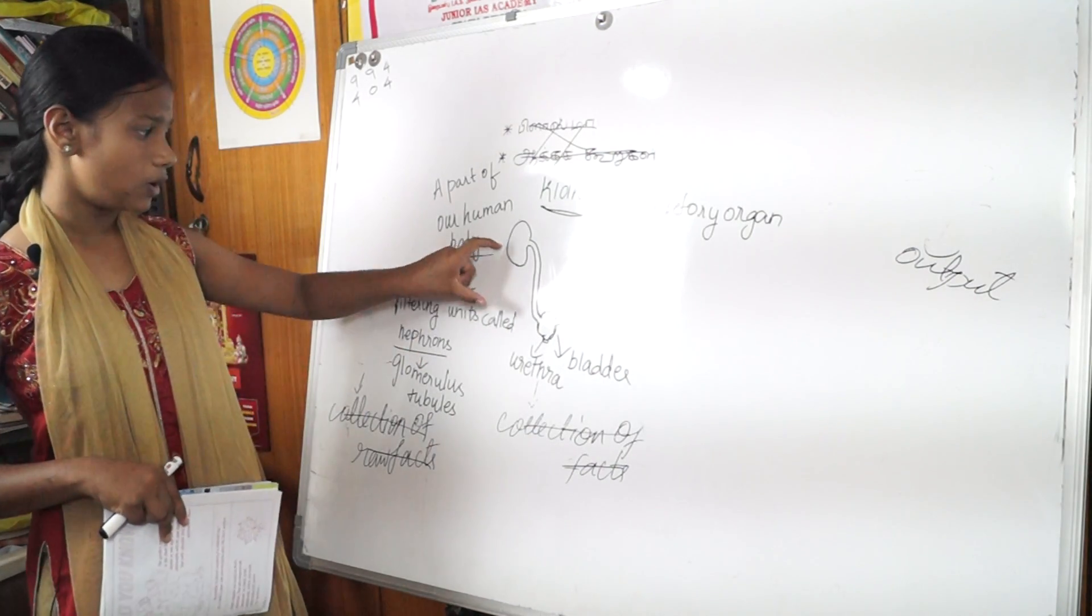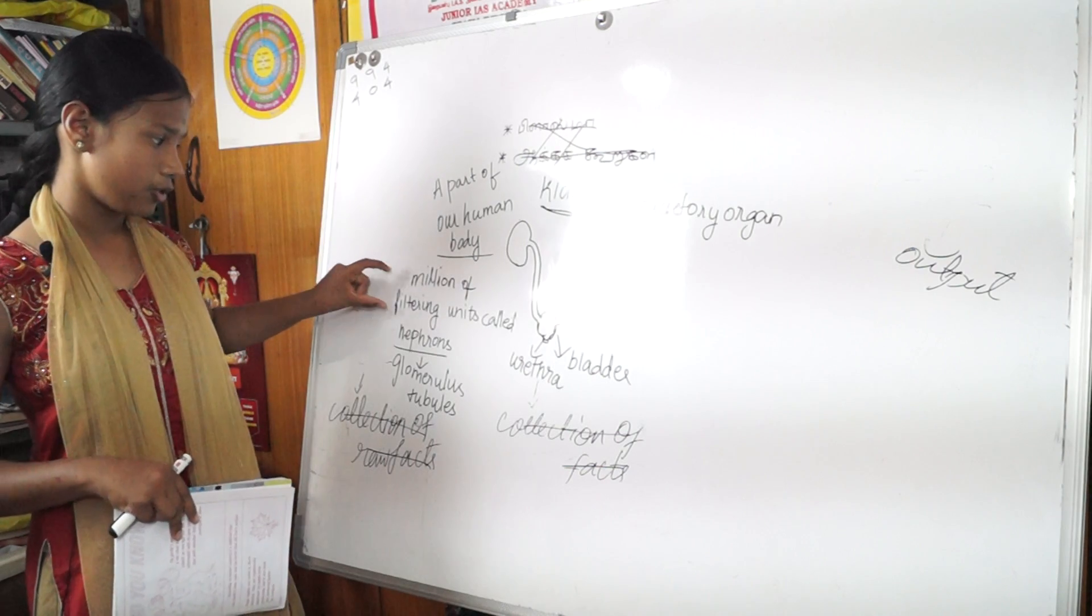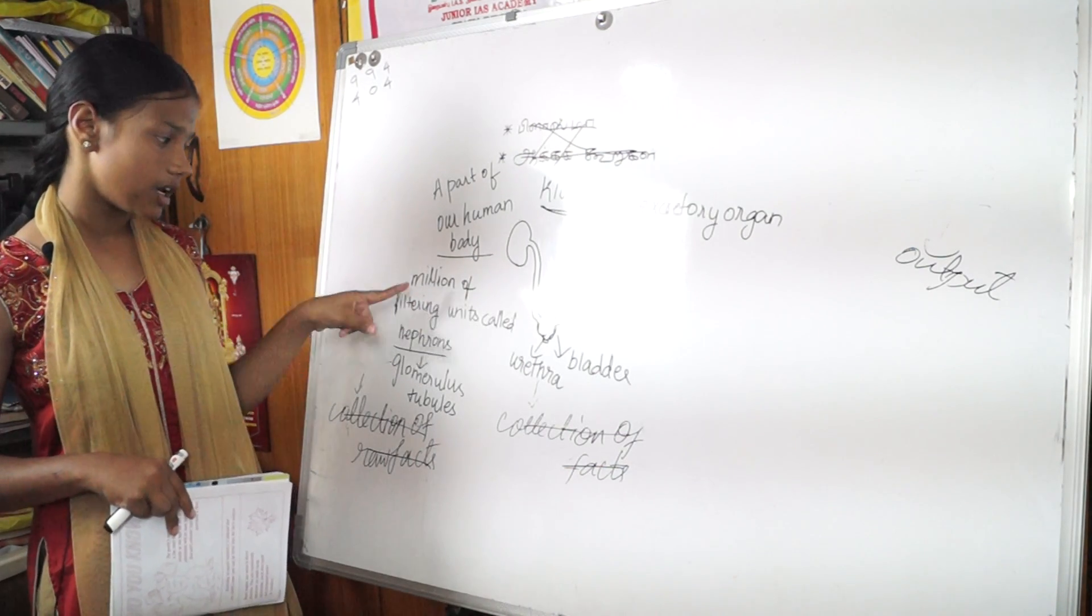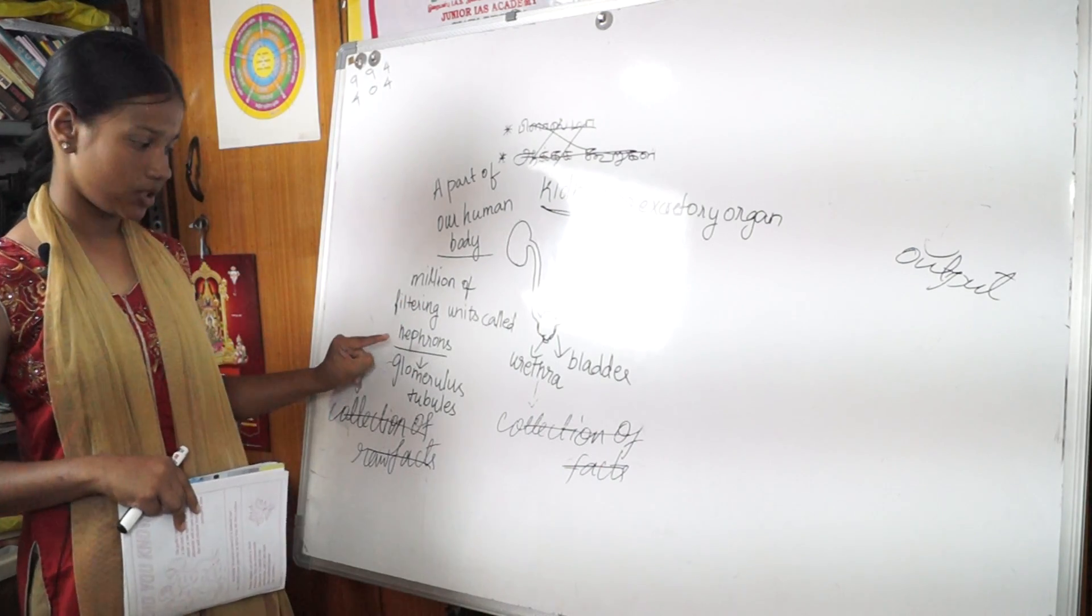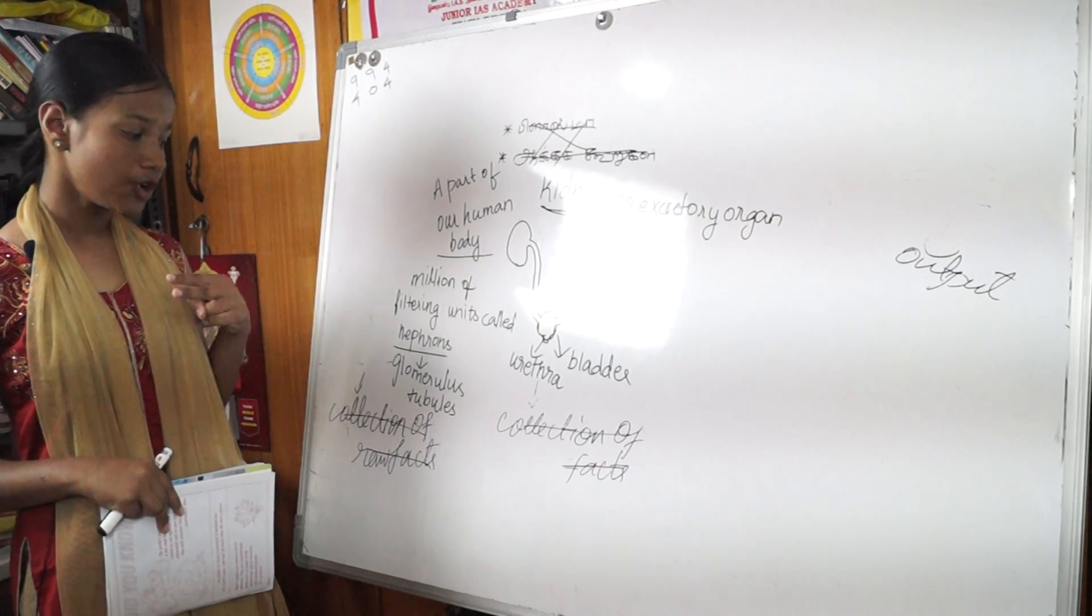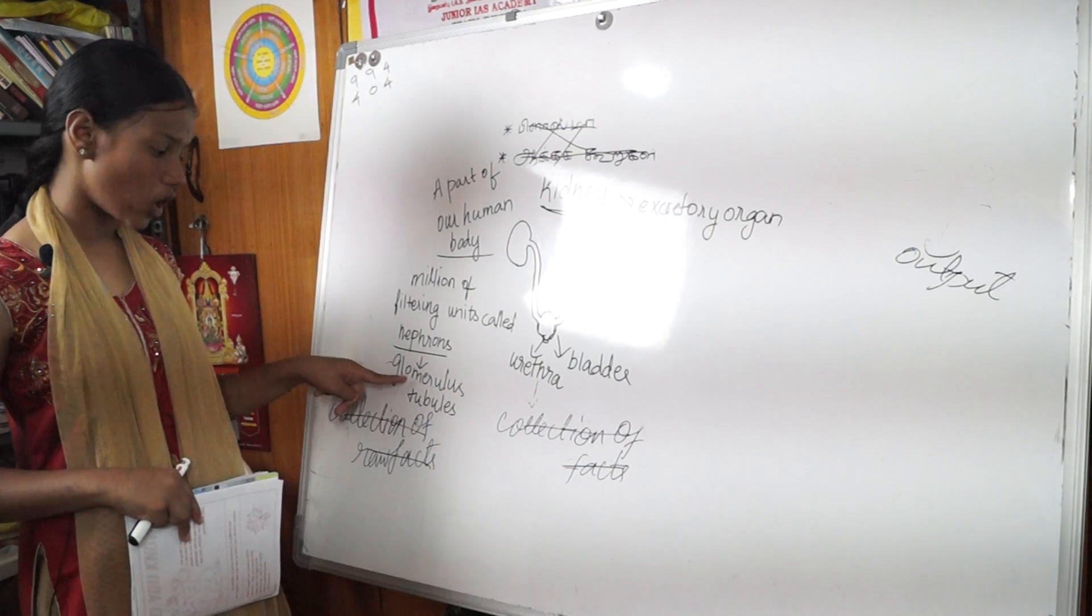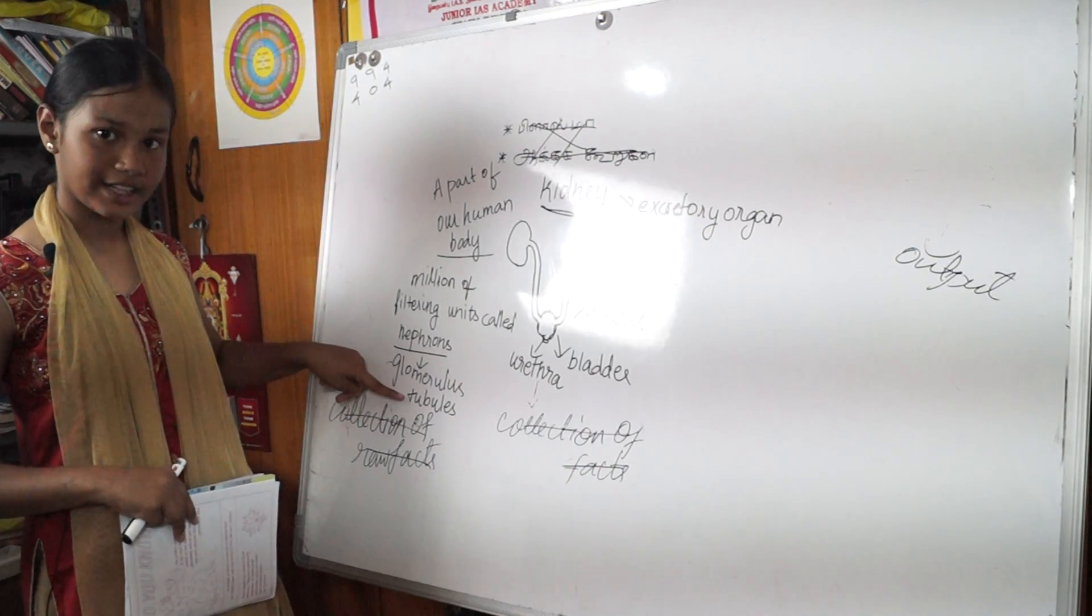Next, the nephrons. A kidney has millions of filtering units called nephrons. The nephrons consist of two filters called glomerulus and tubules.